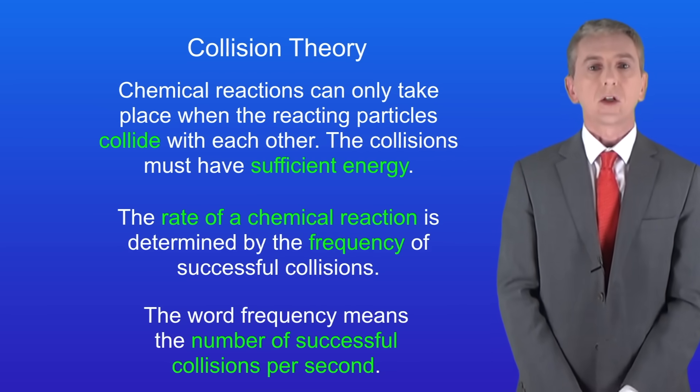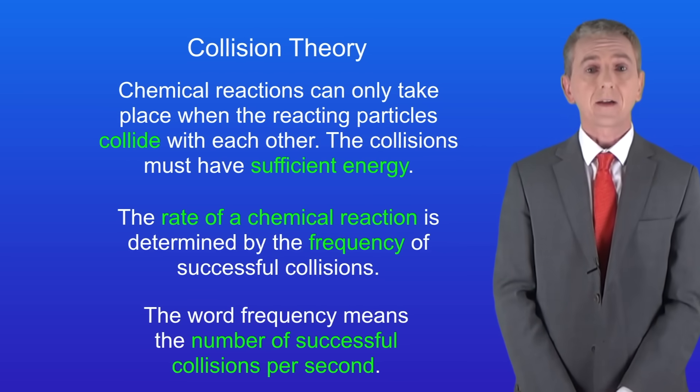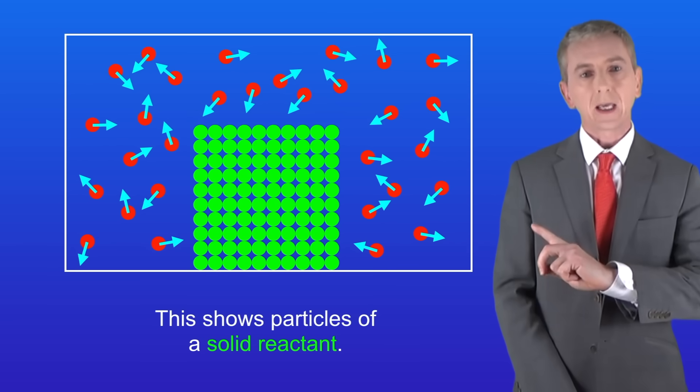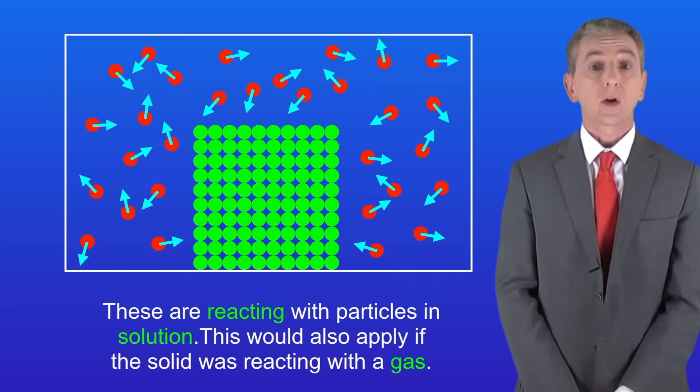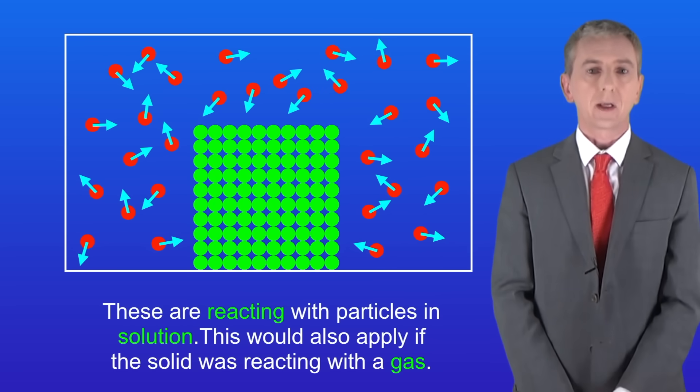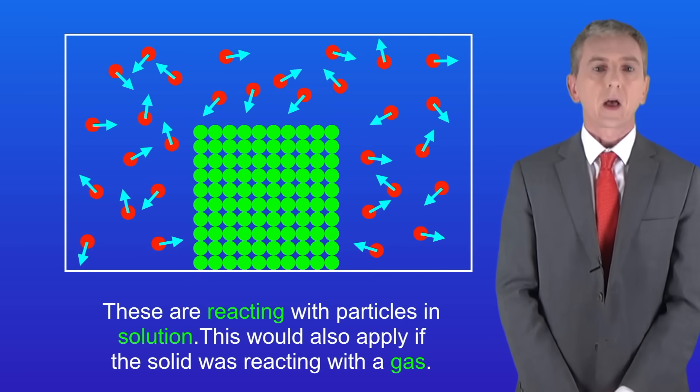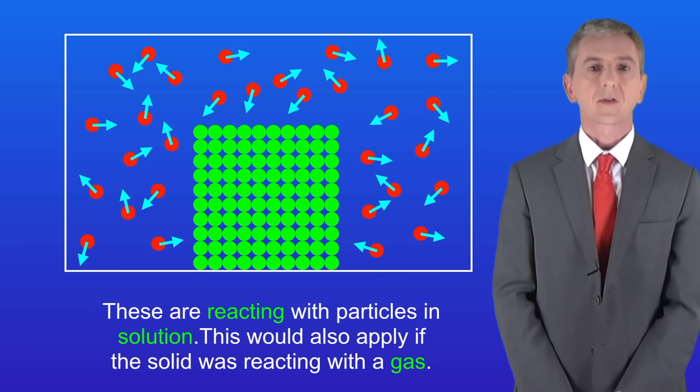So in this video we're looking at how the surface area of a solid reactant affects the rate of a reaction. I'm showing you here particles of a solid reactant. These are reacting with particles in solution and those are shown in red. I should point out that this would also apply if the solid was reacting with a gas.